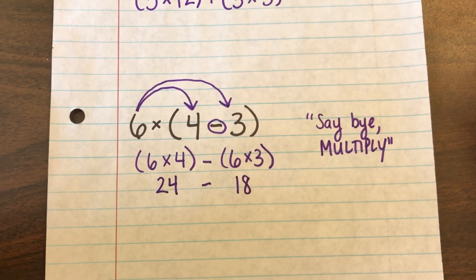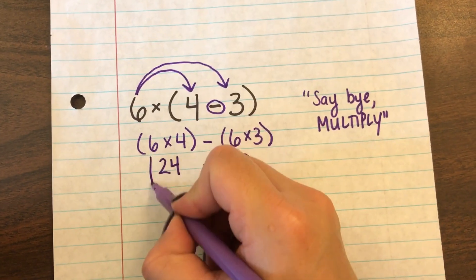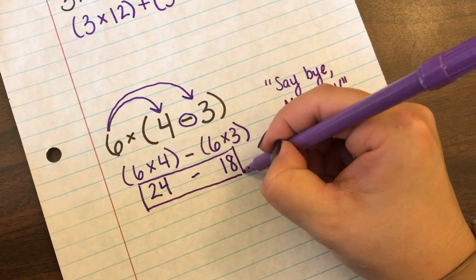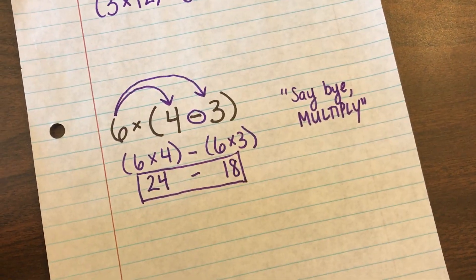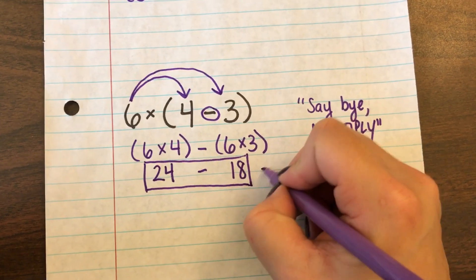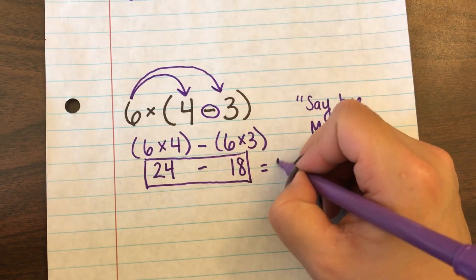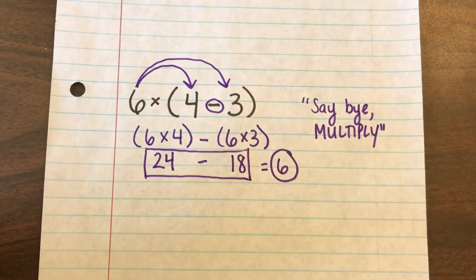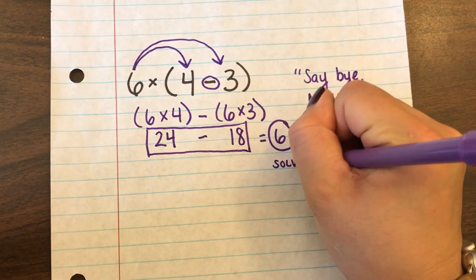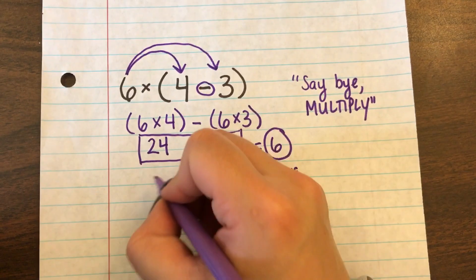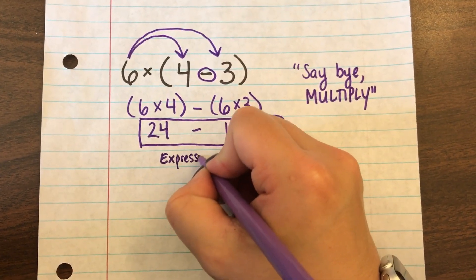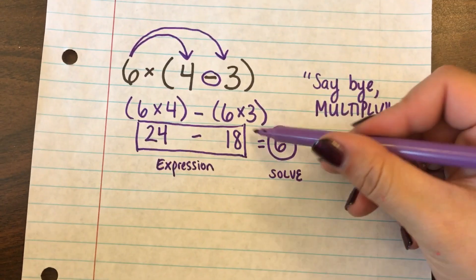Now usually if it asks you just for the expression you would leave it just here, just like that. But if it asks you to fully solve it you would do 24 minus 18 which is 6. And that's only if it asks you to solve. Okay so solve you'd get an answer here. If it asks you for an expression you would leave it as this one here.